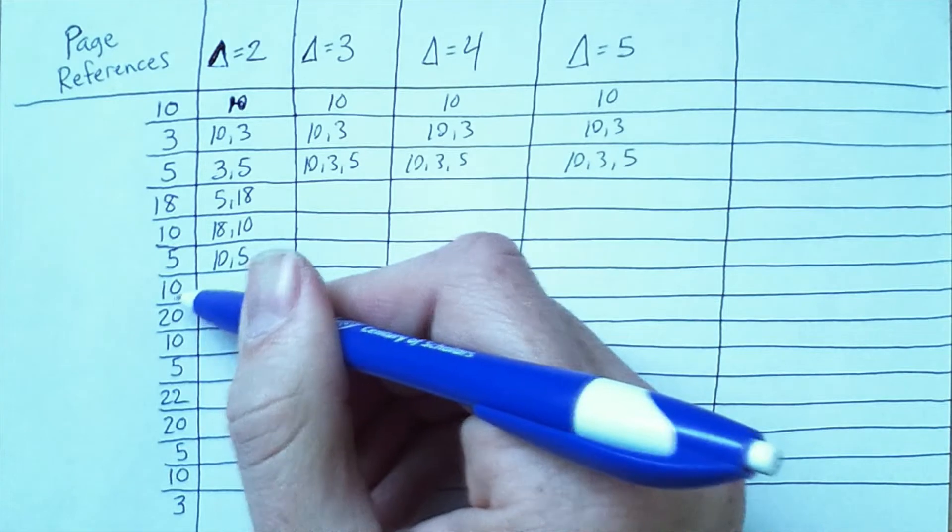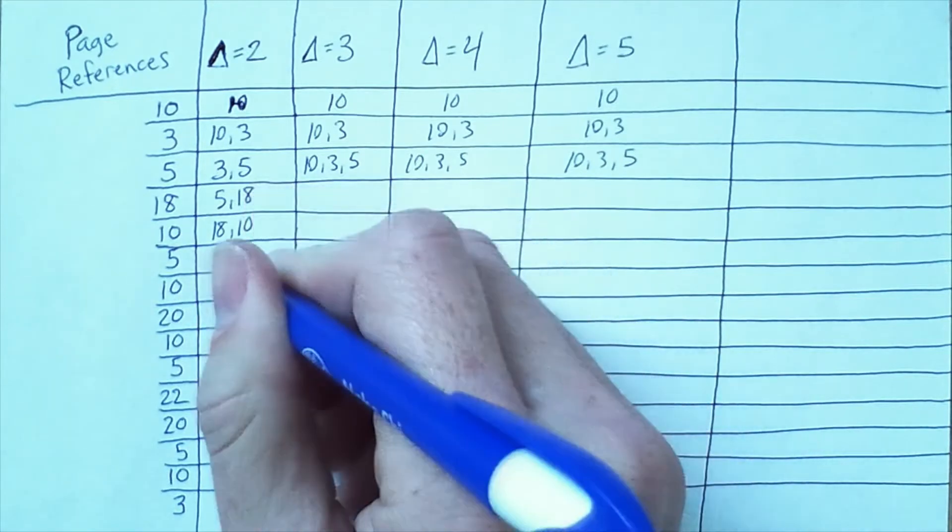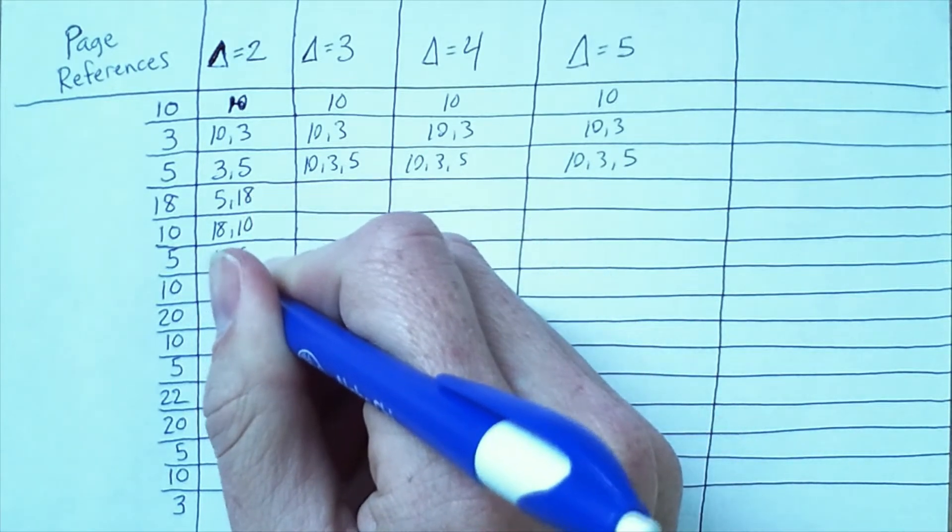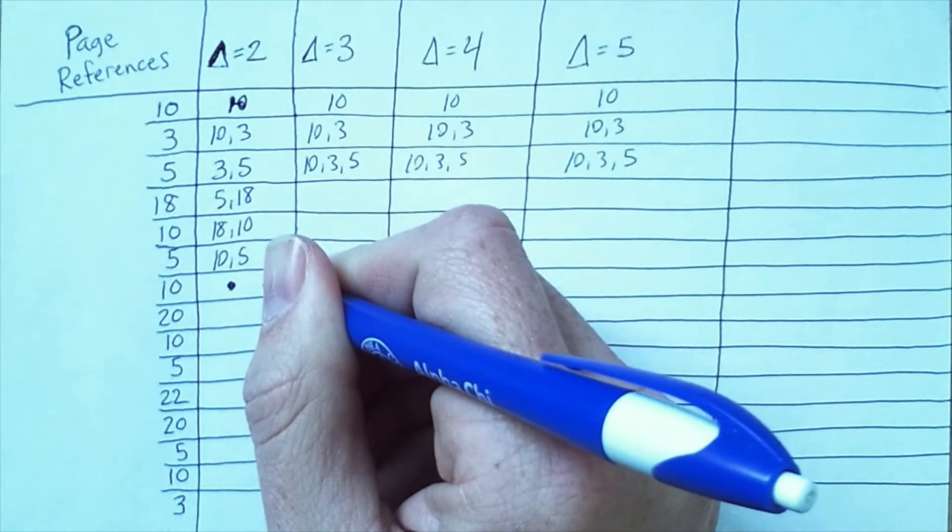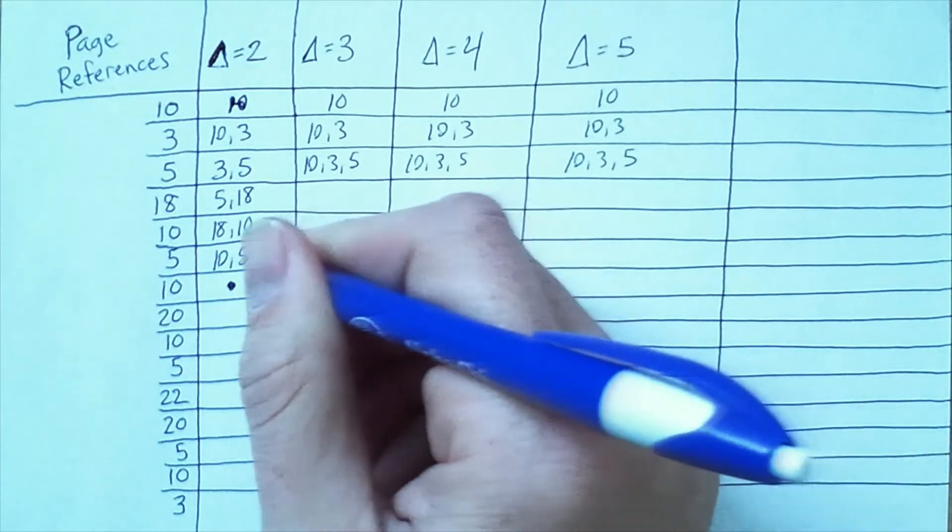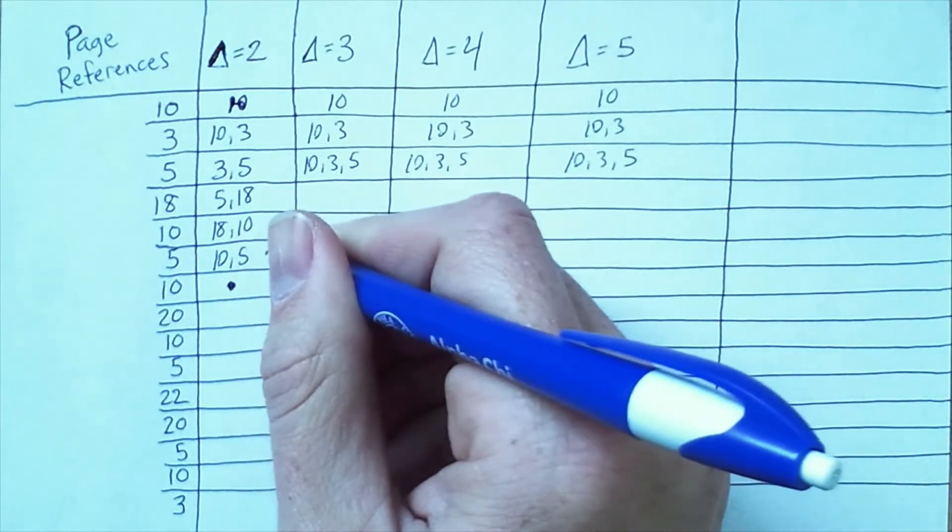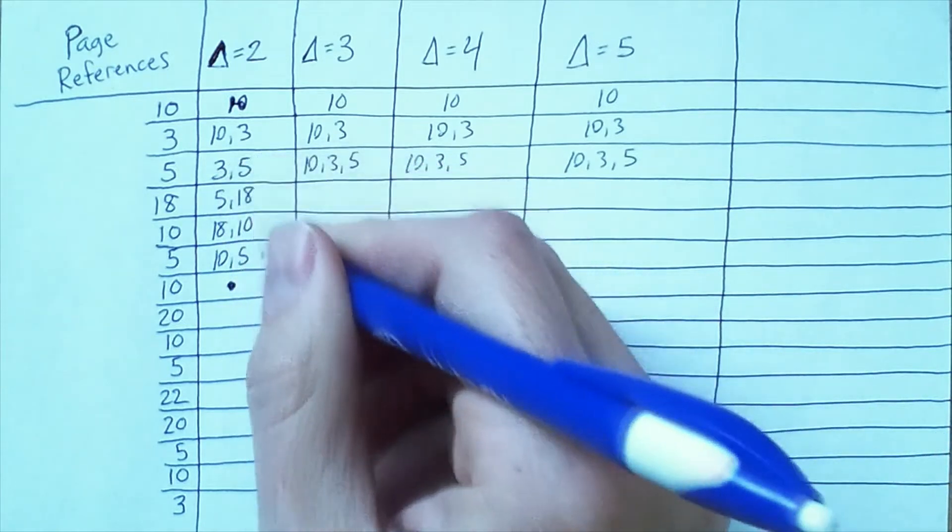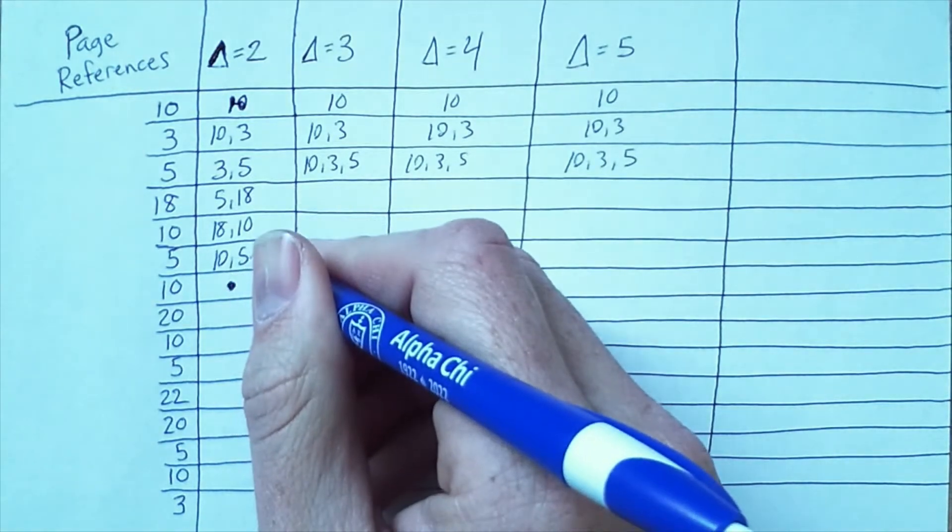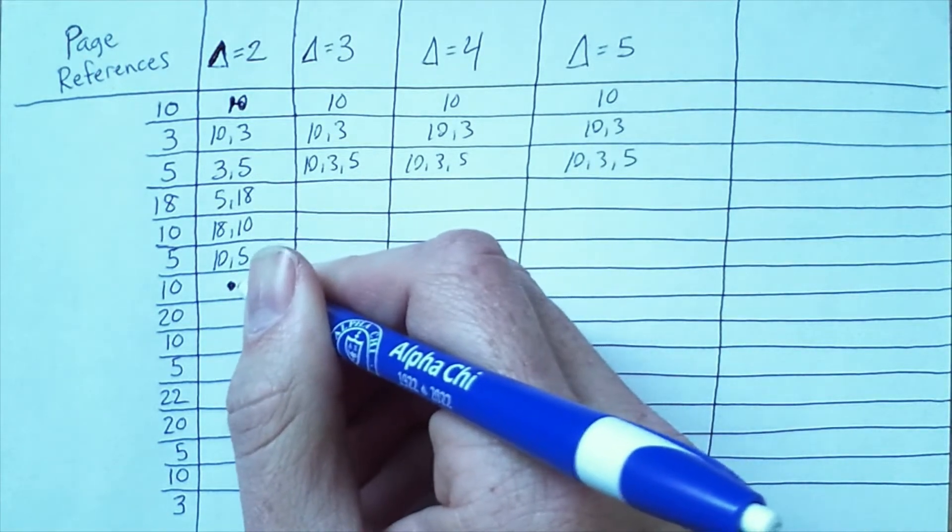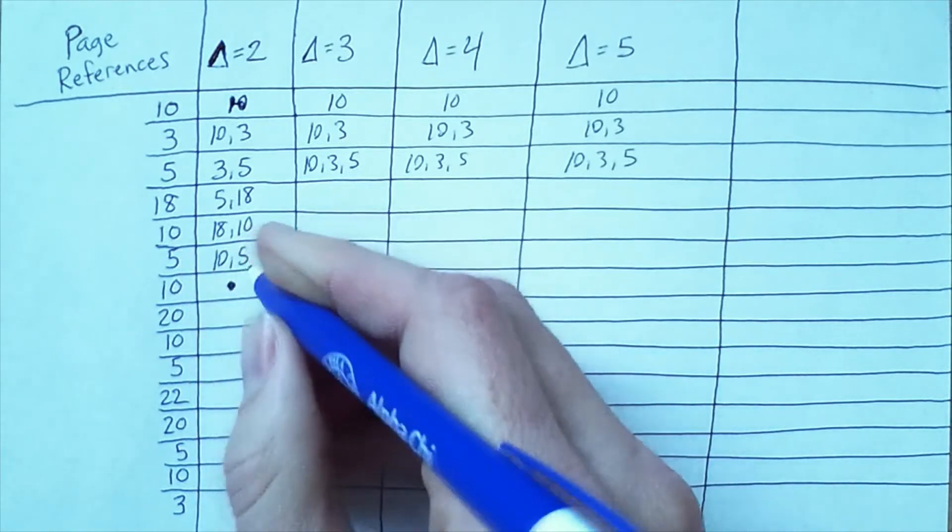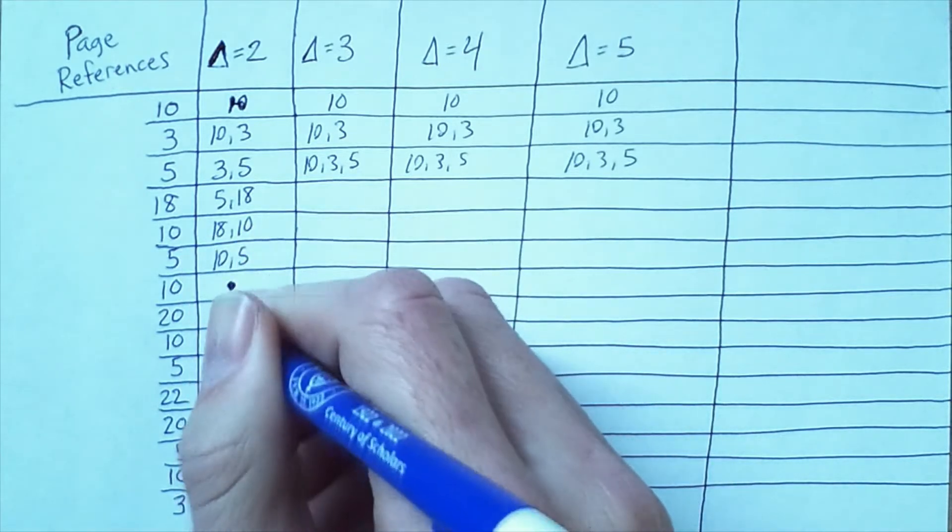Now at this point, for delta equals 2, we have to lose a value because we're accessing 5 and we access 3 here. We're only storing pages that are within two time steps, so we'll have 3 and then 5 and we lost the 10. That's not true for the rest of these because they're all larger values of delta.